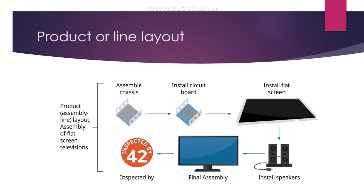Let's see this in a pictorial way using TV production as an example. The first station assembles the chassis, the second installs the circuit board, the third installs the flat screen and speakers, the next goes to final assembly, and the last performs final inspection. If you insert materials into the first machine, you get the final product at the end without any disturbances in the production system.